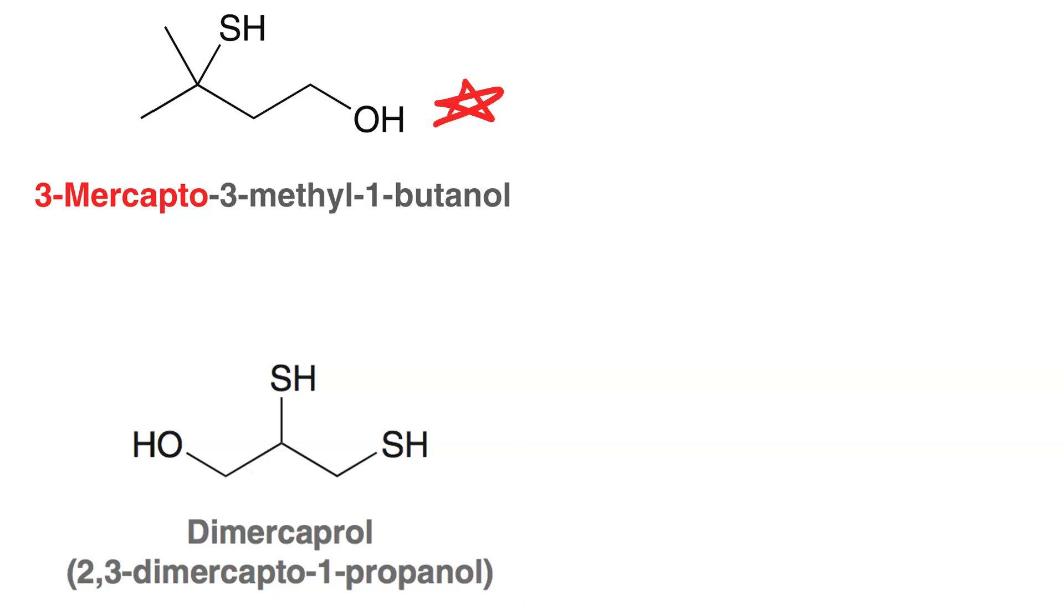Here is a compound that is both a thiol and an alcohol at the same time. Now you want to name this as an alcohol because the most oxidized carbon is the one that is alpha to the hydroxyl group.